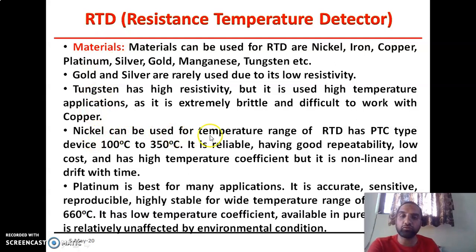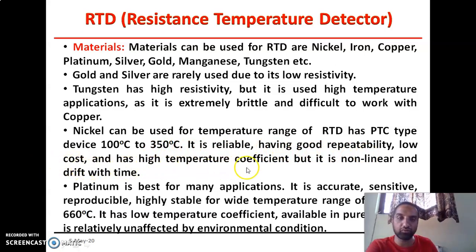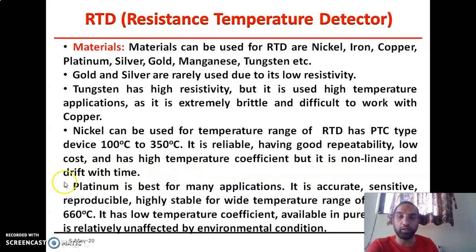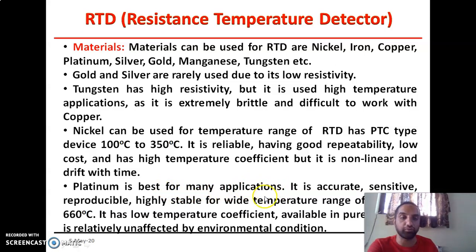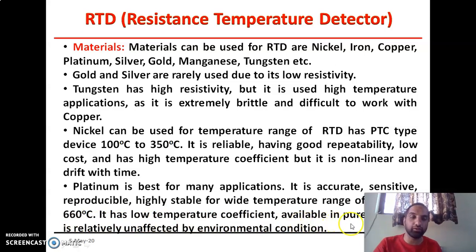Nickel can be used for RTD in the temperature range of −100°C to 350°C. It is reliable, has good repeatability, low cost, and a high temperature coefficient, but it is non-linear and drifts with time. Platinum is the best option for the construction of RTD for many different applications. Platinum is accurate, sensitive, reproducible, and highly stable for a wide temperature range from −190°C to 660°C. It has a low temperature coefficient, is available in pure form, and is relatively unaffected by environmental conditions.